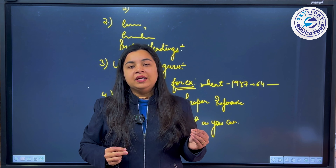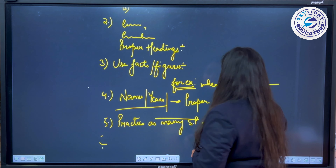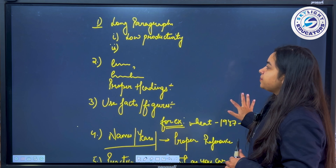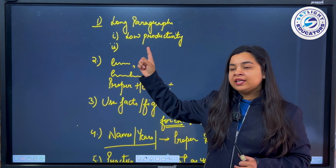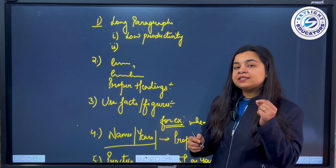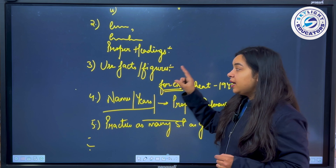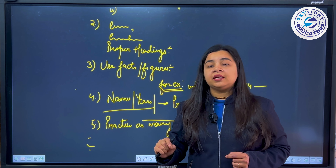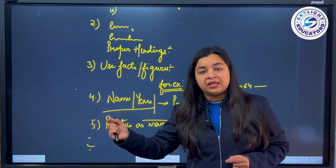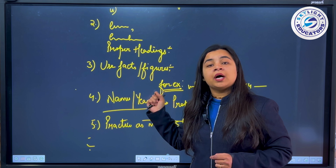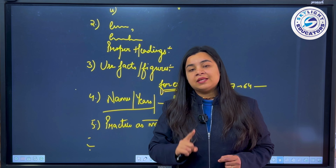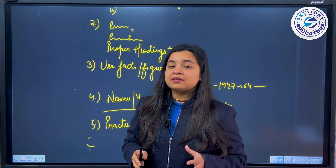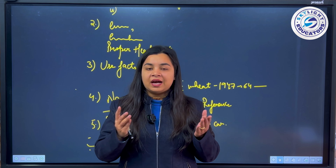It will give you an experienced feeling. So with these 5 tips and tricks, you can make your answer sheet more attractive. First, avoid long paragraphs. Second, give proper headings and subheadings. Third, use facts and figures wherever you can. Fourth, give proper references — names, years, or committee recommendations. Last, practice as many sample papers as you can. With this, you will score 100% marks in Indian Economy and your merit score will also be good.